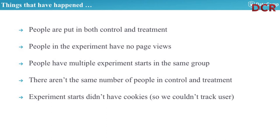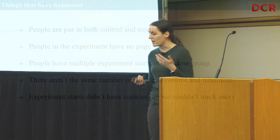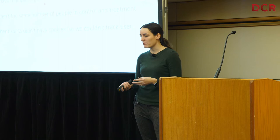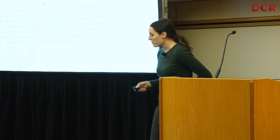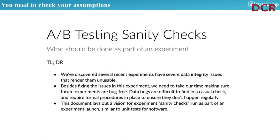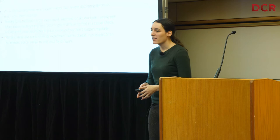Experiment starts didn't have cookies, so we couldn't track the user. If we didn't record a cookie with the experiment start, we couldn't see what else they did. So we built A/B testing sanity checks — figuring out early on to make sure these things aren't happening once we find data integrity issues. You always need to check your assumptions.